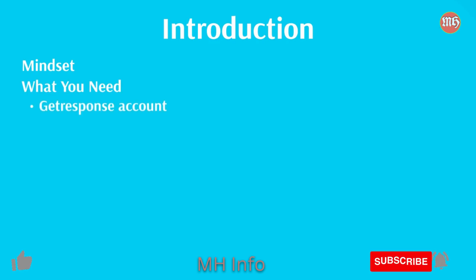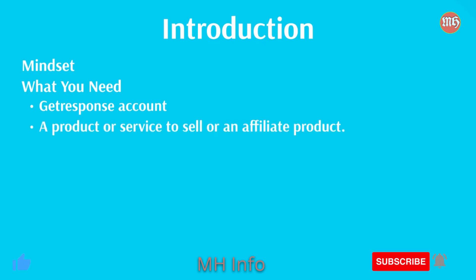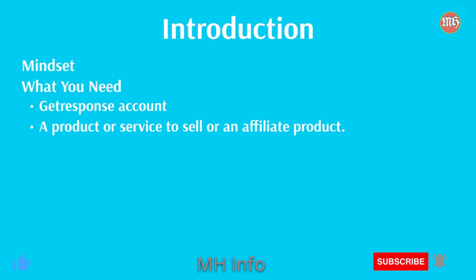Let's talk about what you need. Obviously, you're going to need an autoresponder account, and we're going to be using GetResponse. Go to GetResponse.com and create an account, and we'll be walking you through step by step. You need to have a product or service to sell or an affiliate product — either your own product or somebody else's product. Either way, you're going to need to have an end goal.